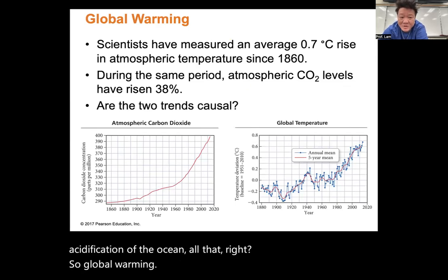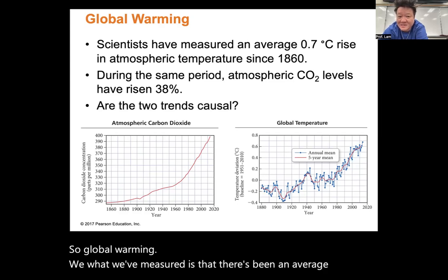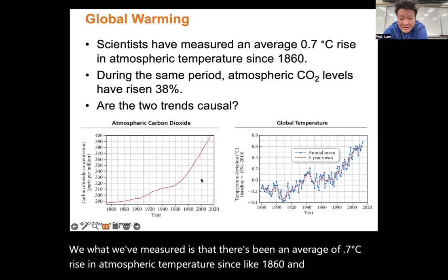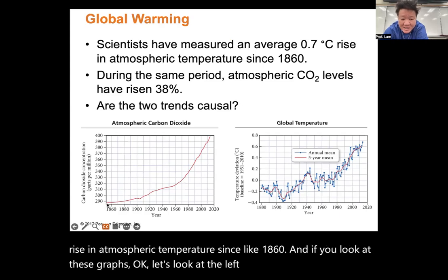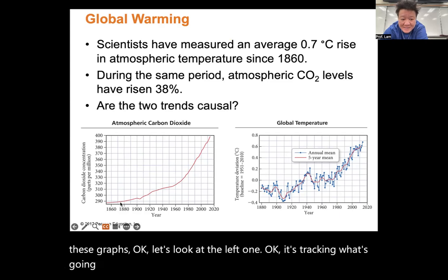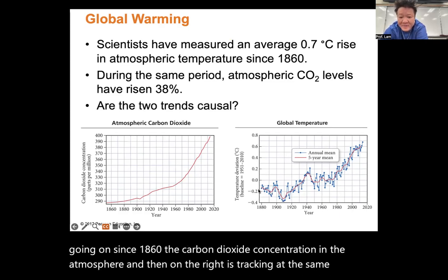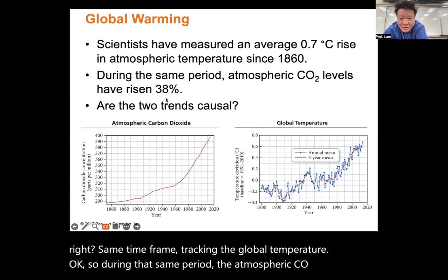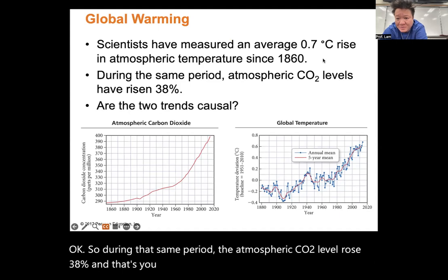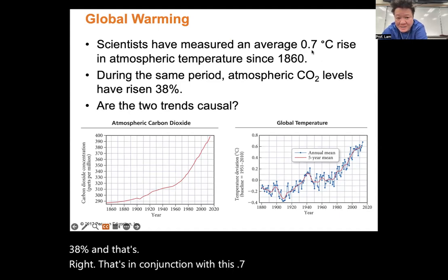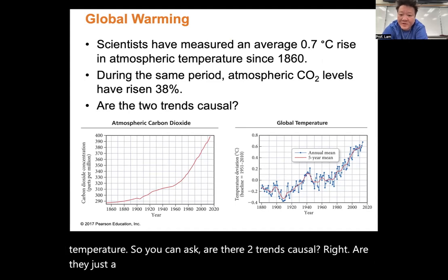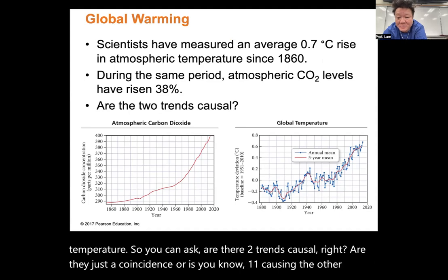What we've measured is an average 0.7°C rise in atmospheric temperature since 1860. The left graph tracks CO2 concentration since 1860, and the right tracks global temperature over the same period. During that period, atmospheric CO2 rose 38%, in conjunction with the 0.7°C rise. We can ask: are these two trends causal, or just a coincidence? We're going to use stoichiometry to answer that question.